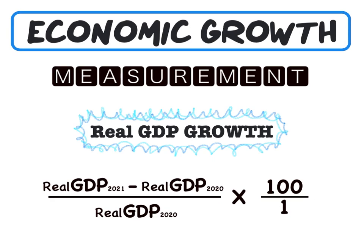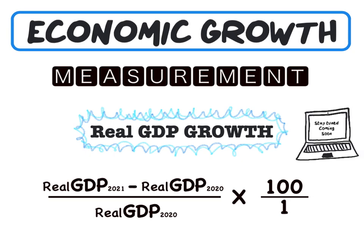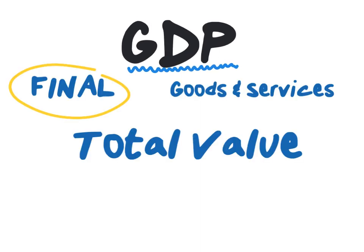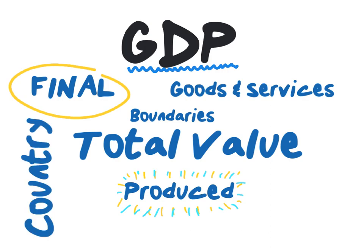In order to determine whether the economy has grown, we will use the following formula: real GDP from our current year minus real GDP of our previous year, divided by real GDP of our previous year, multiplied by 100. It's important to note that this measurement calculates economic growth using real GDP, not nominal GDP. A detailed explanation on the difference between real and nominal GDP is coming soon, so stay tuned to the YouTube channel. But what is GDP? GDP can be defined as the total value of all final goods and services produced within the boundaries of a country during a specific time period.